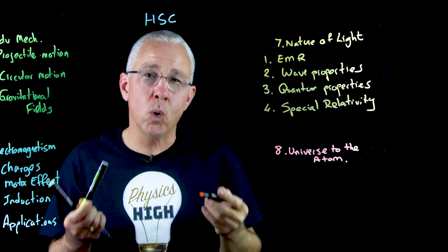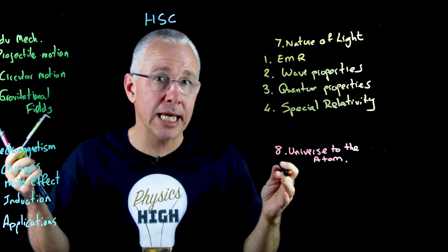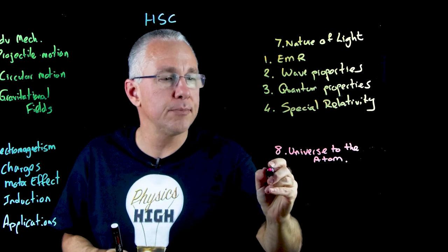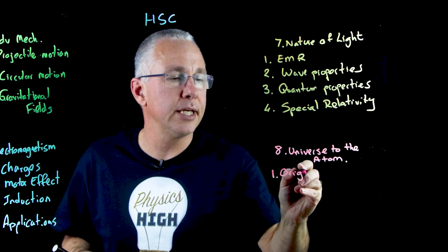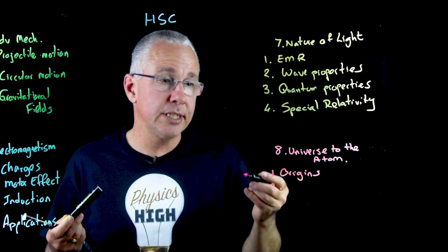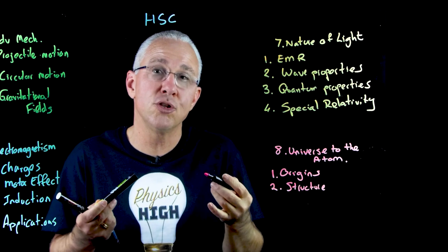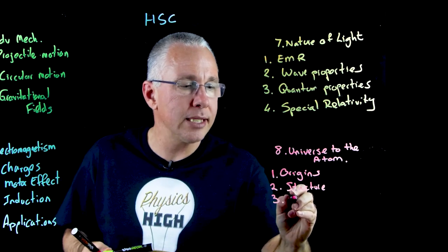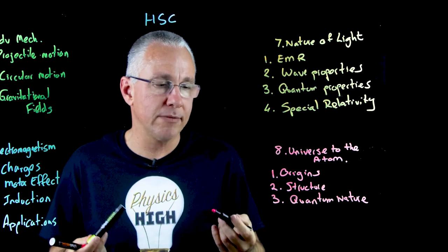Finally we get to Module 8, which is all about our understanding of the elements — going from the big to the small, from understanding atoms down to their nucleus and even smaller still. We start with the origins of the elements, which leads us to our understanding of the Big Bang and the beginning of the universe. The second inquiry question deals with the structure of the atom, including its historical development. We then continue with the quantum nature of the atom, studying how electrons have wave-like properties.